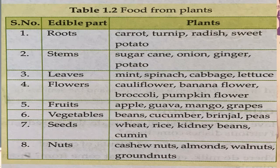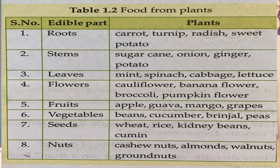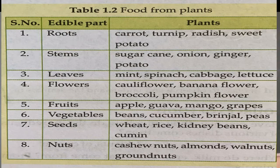The next part of the plant is the stem, which is above the ground. That is called the stem. Now, which part of the plant can be eaten as a stem? That is sugarcane.